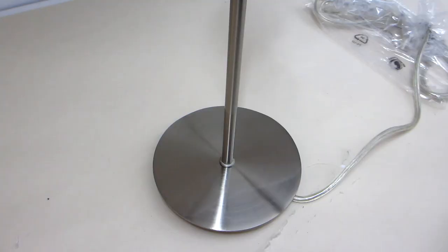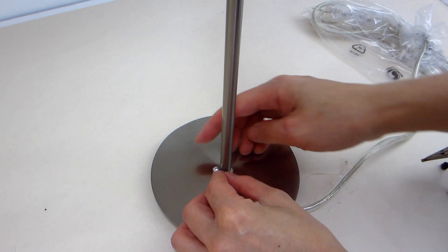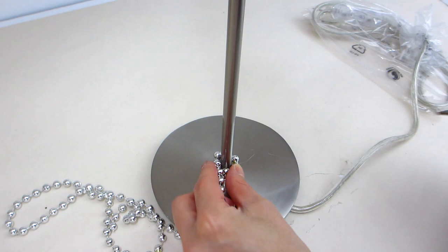Now we set the lampshade aside so we can start on the lamp base. First we take a string of beaded necklace and wound it all around the lamp post. To ensure the beads don't move around, use small dollops of hot glue to adhere the beads to the lamp post.